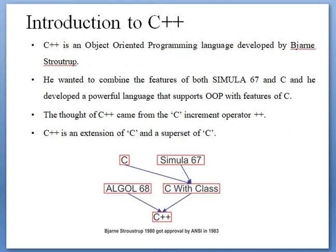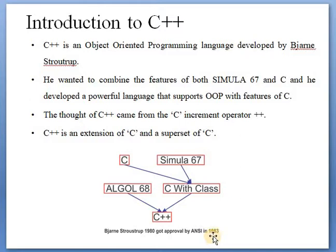Introduction to C++. The developer of C language is Dennis Ritchie. C++ is an object oriented programming language developed by Bjarne Stroustrup. He wanted to combine the features of both Simula 67 and C. To develop C++, they combined all the features of C and some features of Simula 67. That language was previously called C with classes, but in 1983 it was approved and named C++.